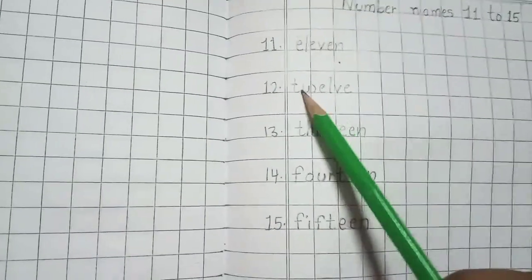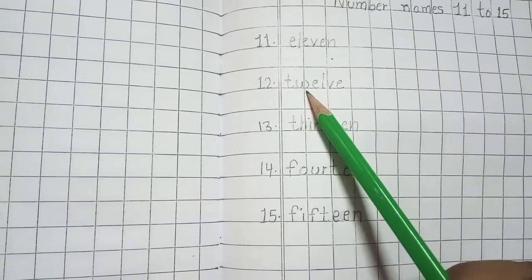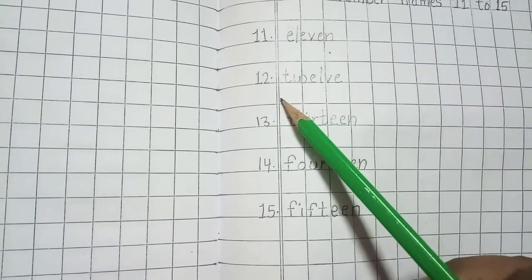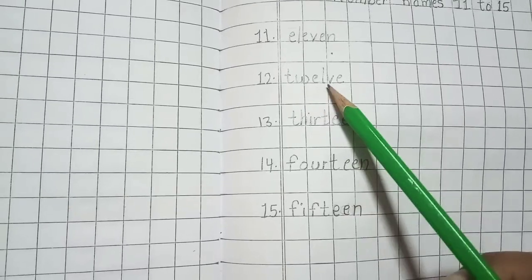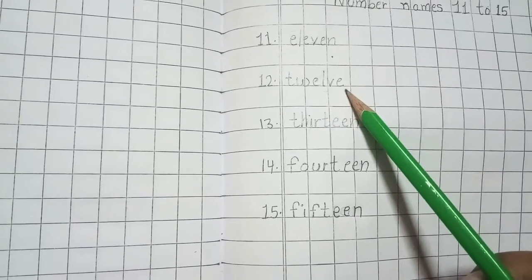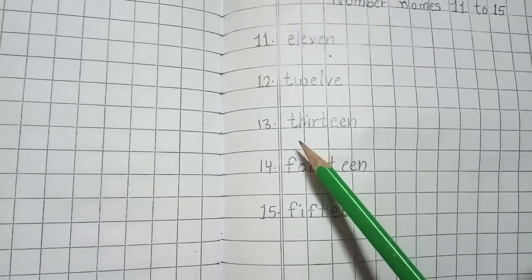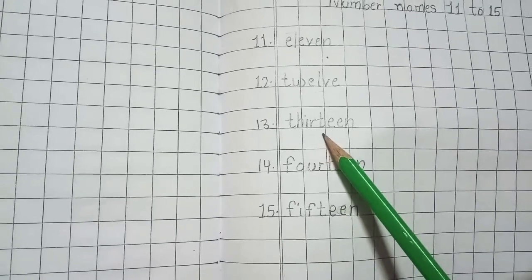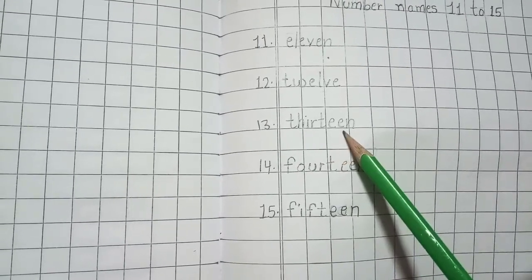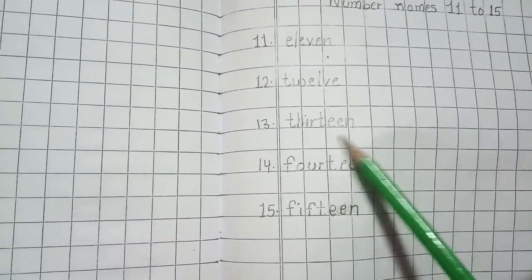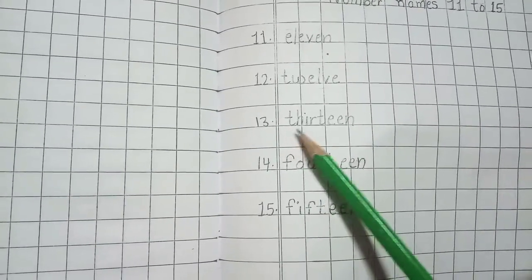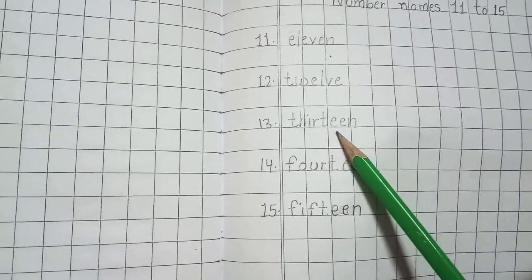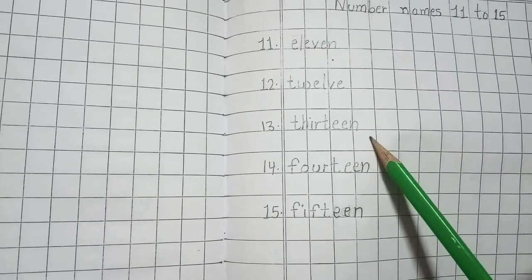Next we have 12. T W E L V E, 12. T W E L V E, 12. Next comes 13. T H I R T E E N, 13. Again, T H I R T E E N, 13.